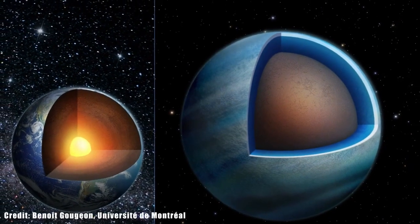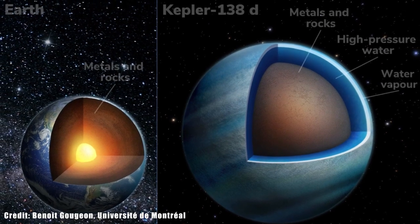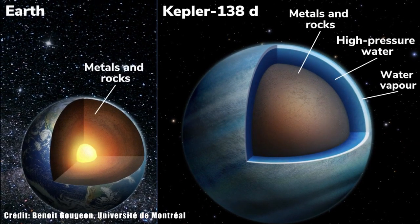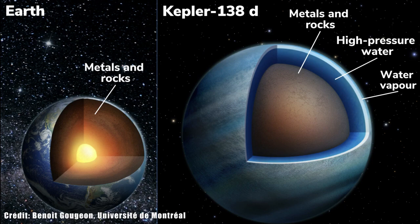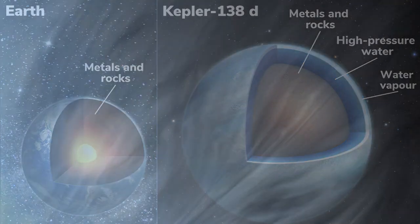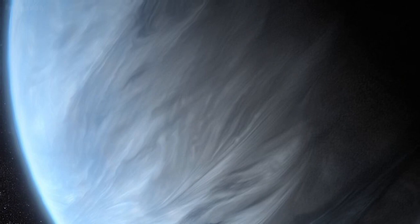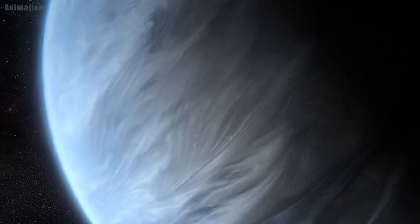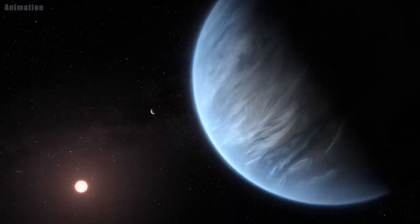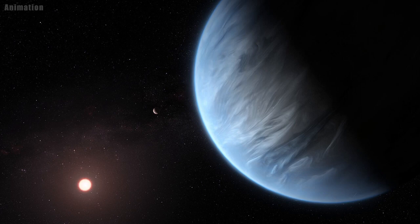Researchers caution that the planets may not have surface oceans like on Earth. The temperature of one planet's atmosphere is likely above the boiling point of water. They expect a thick, dense atmosphere made of steam on this planet, but there could potentially be liquid water at high pressures below it.